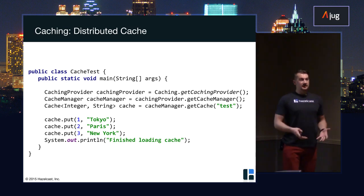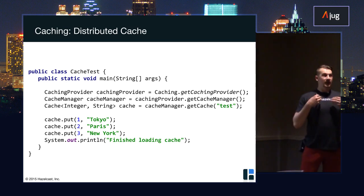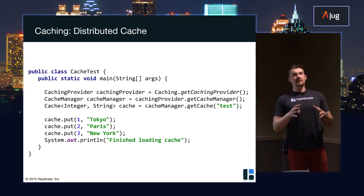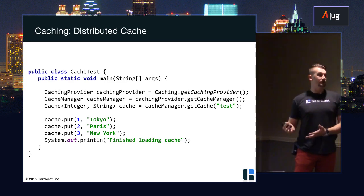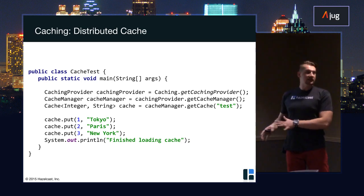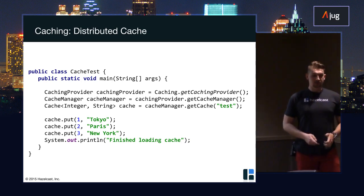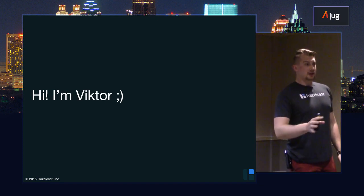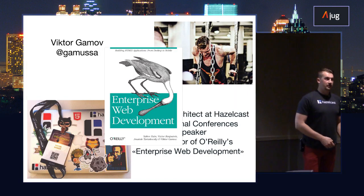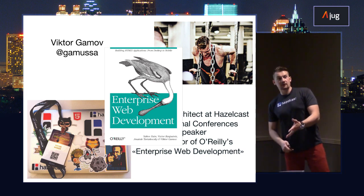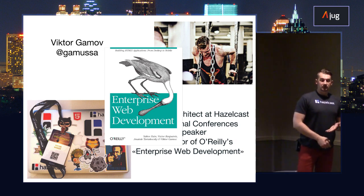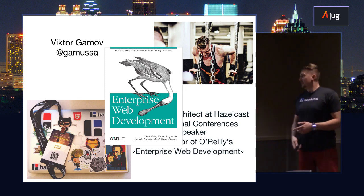JCache is the vendor-agnostic API for accessing map-like structures in the same flavor that ConcurrentMap provides. You basically have the same semantics, however it looks more like a caching application, and it doesn't depend on any vendor implementation. So finally, I can introduce myself. I'm Victor. I work at Hazelcast as a solution architect. I speak to developers at conferences, user groups, and other events. I'm also co-author of the Enterprise Web Development book - that book is about JavaScript, not Java, so we'll skip it.